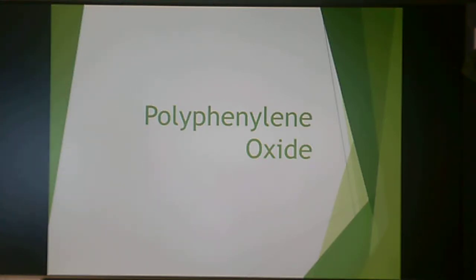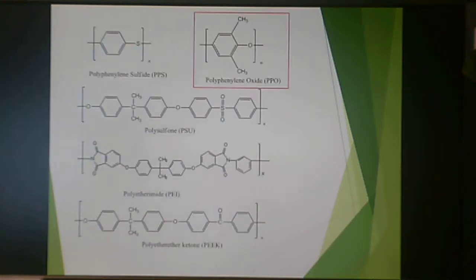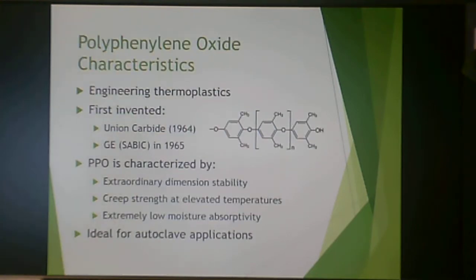Welcome to the polyphenylene oxide lecture for thermoplastic resins. This is the last of our sulfur and oxygen-containing thermoplastics. Polyphenylene oxide is shown here in this red box. It has an aromatic backbone with two methyl groups and an oxygen in the backbone. This falls under the category of an engineering thermoplastic, and it was first invented by Union Carbide in 1964, with GE or SABIC working on it in 1965.